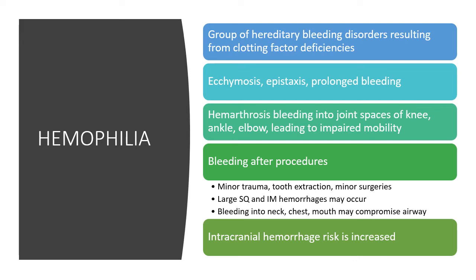If you can't clot, even a small injury can be life-threatening — even a tiny lip injury can become a constant, life-threatening bleed if not managed. Hemarthrosis — bleeding into a joint such as the knees, elbows, ankles, or shoulders — leads to impaired mobility. Even minor trauma, tooth extractions, and minor surgeries can cause significant bleeding. Large subcutaneous and intramuscular hemorrhages may occur, and bleeding into the neck, chest, mouth, or airway can compromise airway management and patient stability.